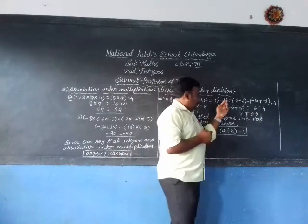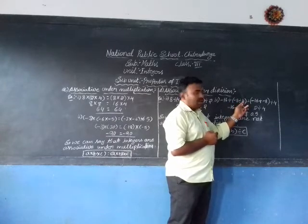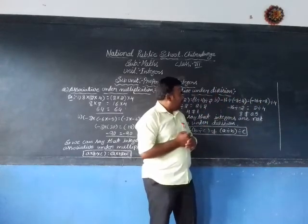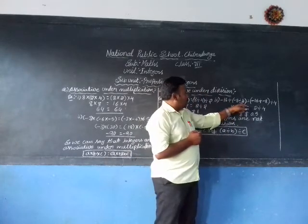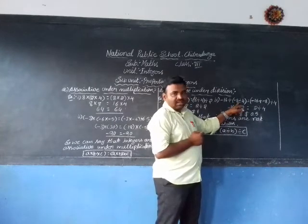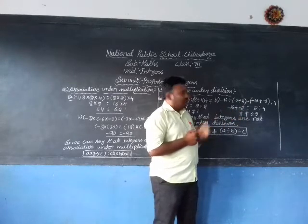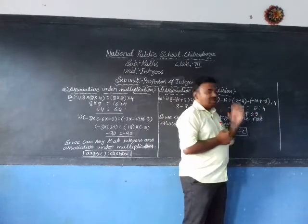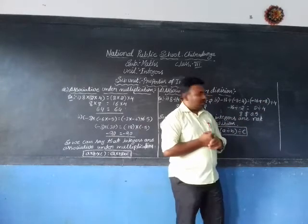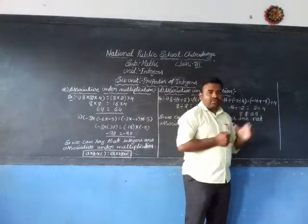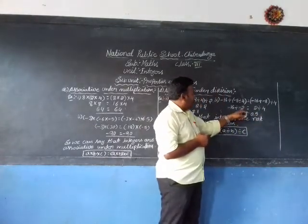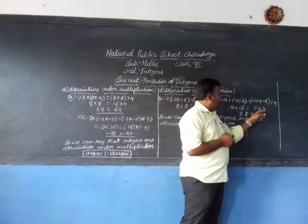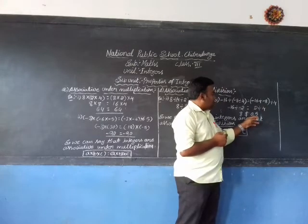Second example: (−16 ÷ −8) ÷ 4 = −16 ÷ (−8 ÷ 4). Carry out the brackets. On the left hand side: −16 ÷ −8 = +2 (same sign gives positive), then +2 ÷ 4 = 0.5. On the right hand side: −8 ÷ 4 = −2, then −16 ÷ −2 = +8. So the results are 0.5 and +8, which are not the same.